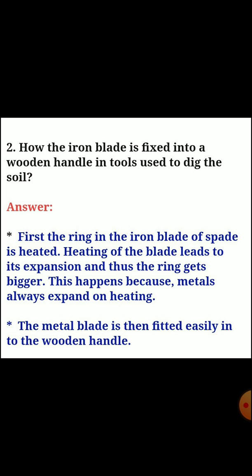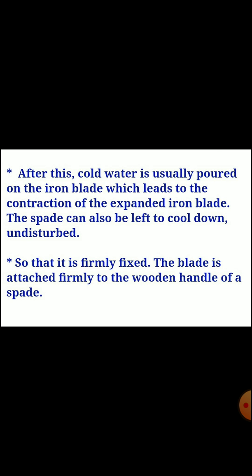Question two: how is an iron blade fixed into a wooden handle in tools used to dig the soil? Answer: first, the ring in the iron blade of the spade is heated. Heating leads to expansion of the ring, making it bigger, as metals expand on heating. The metal blade is then fitted easily into the wooden handle. After this, cold water is poured on the iron blade, causing contraction of the expanded iron blade. The blade is then firmly fixed to the wooden handle.